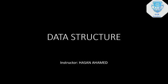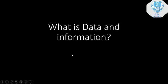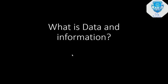In computer science, the most important concept is data. Data is what gets processed by a computer. So what is data? Data is raw facts or figures that don't provide any meaning on their own. When we process the data, it becomes information.